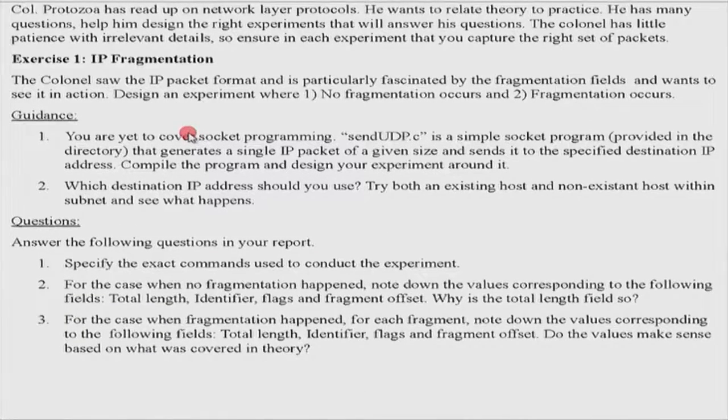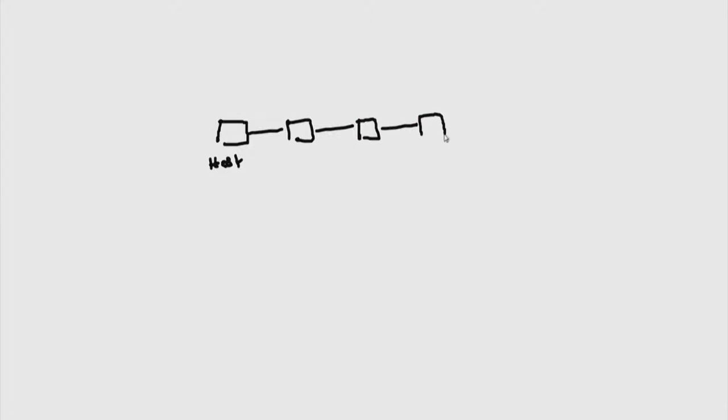The first exercise is on IP fragmentation. If you have covered the concepts, you will know that. What happens is: this is your host and you are sending some packets over multiple hops. These are intermediate routers, let me call them R1, R2, R3. Finally, there is another host at the end point.